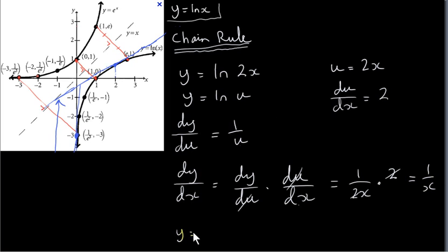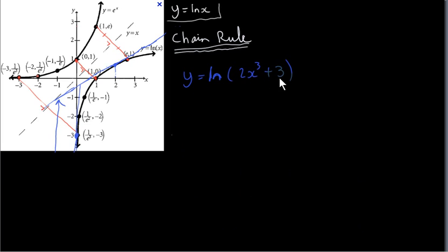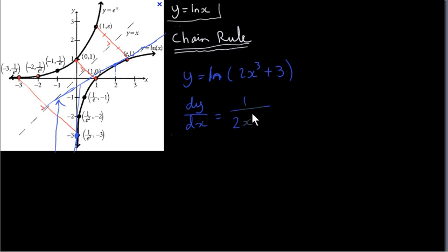So even if y equals ln of ax for any number a, dy/dx works out to be 1 over the argument times the derivative of the argument, which is a, and it just works out to 1 over x — it doesn't matter what a is. If we want to differentiate y equals ln of (2x cubed plus 3), the rule is: when you differentiate ln of something, put 1 over the argument and multiply by the derivative of the argument with respect to x. The derivative of 2x cubed plus 3 is 6x squared, so we get 6x squared over 2x cubed plus 3.